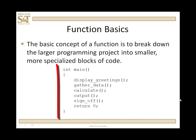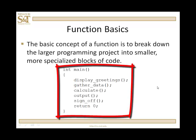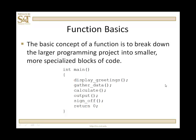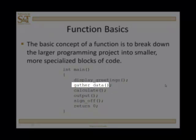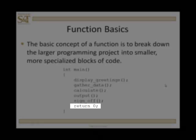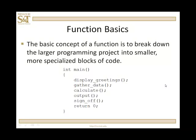Take a look at this example here. Look at this main program. The lines of code are function calls — see how this reads. It reads very easily: display greetings, gather data, calculate, output, sign off, return zero. What we're doing in each one of these statements is redirecting the execution to other blocks of code that reside someplace else. We've created an outline for our program.